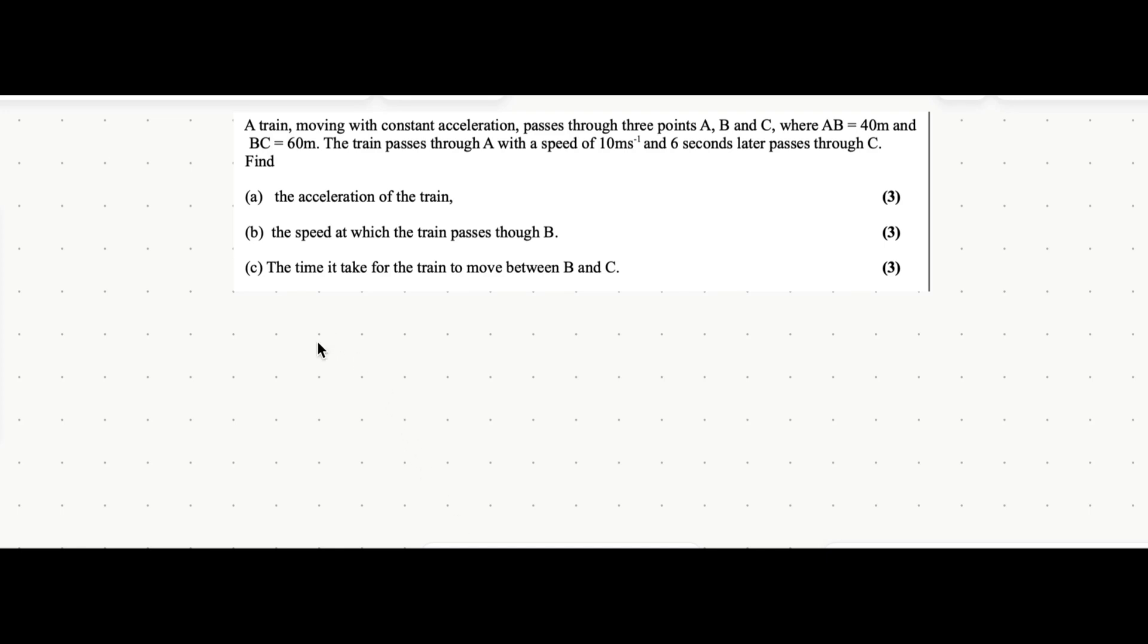This question gives you so much information that you have to order. The train passes through three points A, B, and C. Let's draw them out - drawing out always helps with these questions. Let's label this A, this B, and this C.